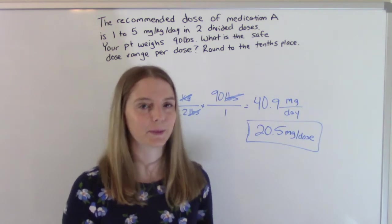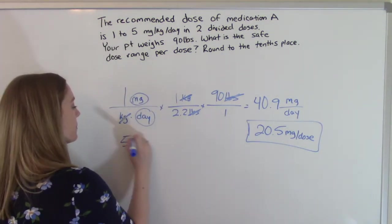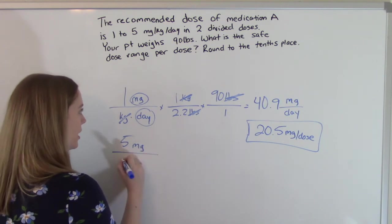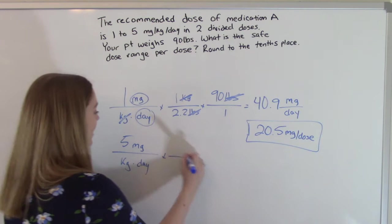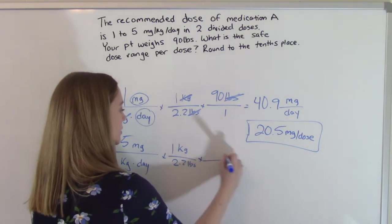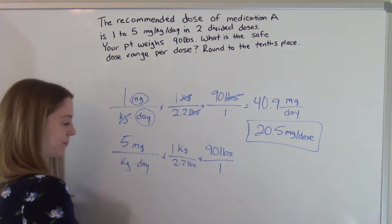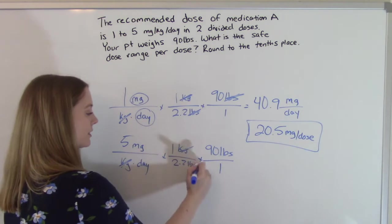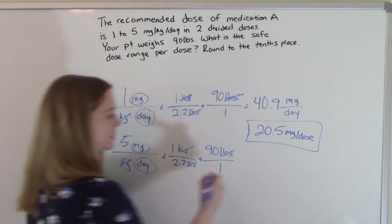Now let's do the maximum. This is our five. And we set the problem up exactly the same way. So it's still milligrams per kilogram per day. We still have to use our converting factor. And our patient is still 90 pounds. That hasn't changed. So all this stuff will cancel like it did before in the top part. We'll still end up with milligrams per day.